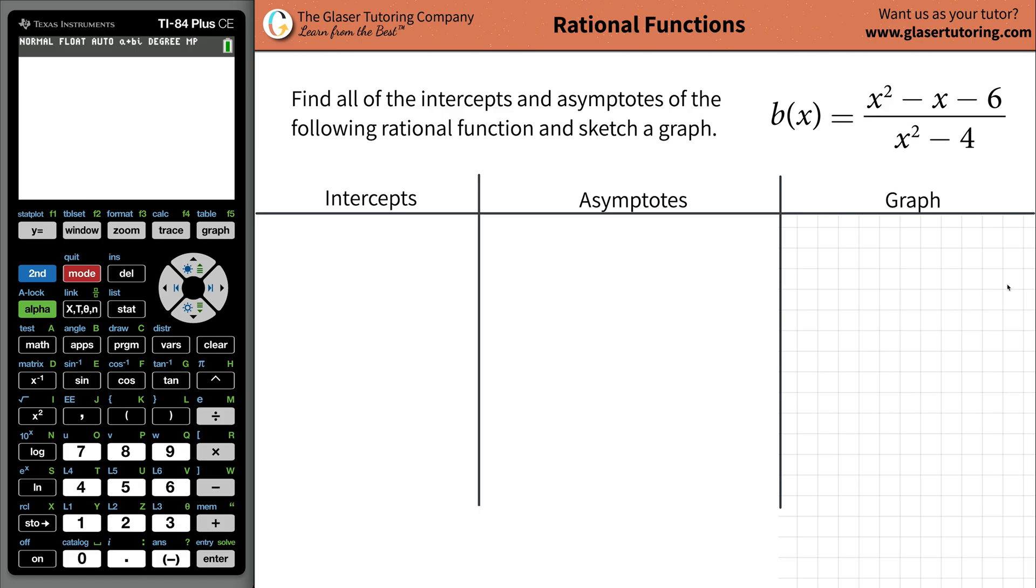Welcome back. Today I'd like to teach you how to find the intercepts and the asymptotes of the following function: x squared minus x minus 6, all being divided by x squared minus 4, and then we're going to sketch the thing a little bit.